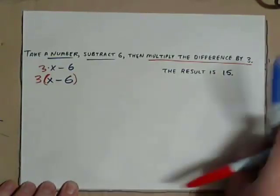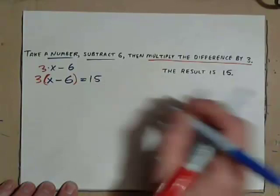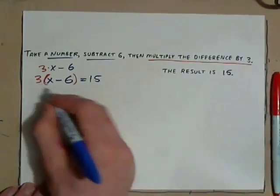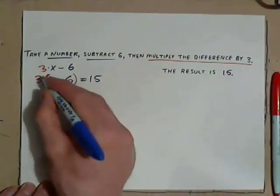And the result is 15. So, that's what we've got, the parentheses around the difference, and the difference is x minus 6.